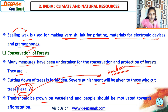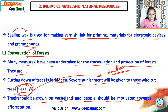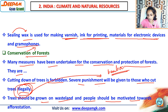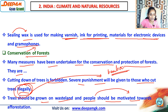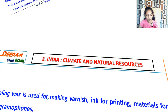Trees should be grown on wasteland, and people should be motivated towards afforestation. When there is wasteland where nothing grows, people should be motivated — afforestation means to grow more trees.